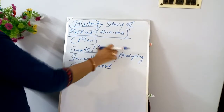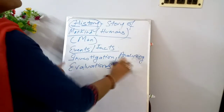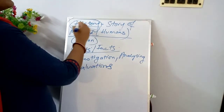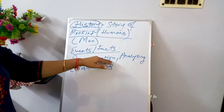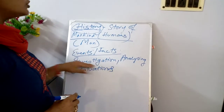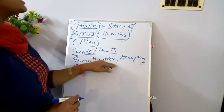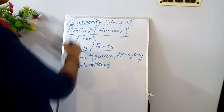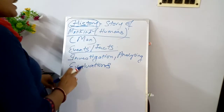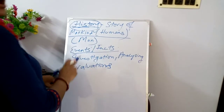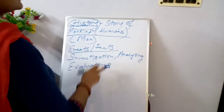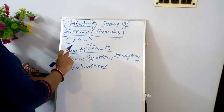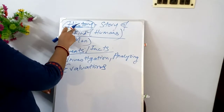The events or facts which go through the process of investigation, analyzing, and evaluation are accepted to be history. Those which are not meeting the demands of these three bases cannot be called history. If any events or facts cannot be analyzed on an investigation, analyzing, or evaluation basis, then that particular event or fact cannot be called history.